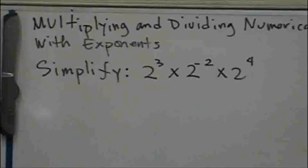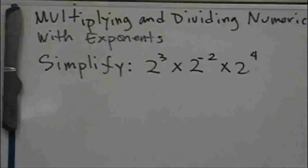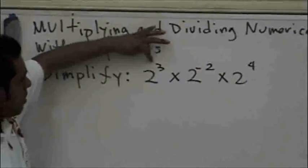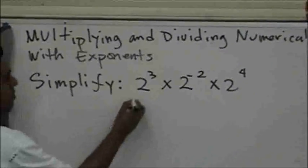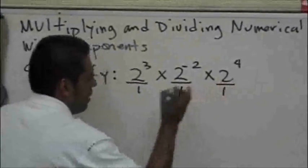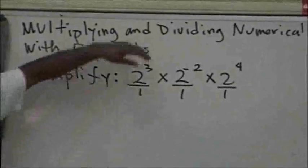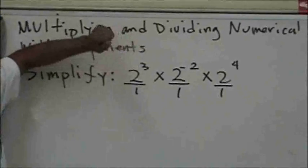Okay, this problem deals with getting rid of exponents and how we deal with their positives and their negatives. Before you start simplifying this problem, go ahead and put a denominator of one. What this does, it helps us identify where the exponents should go.